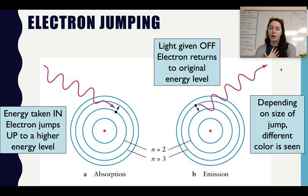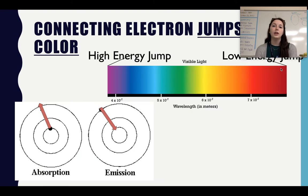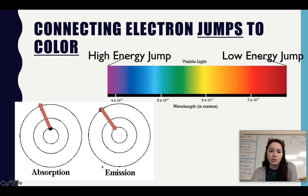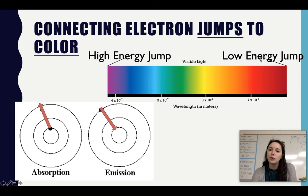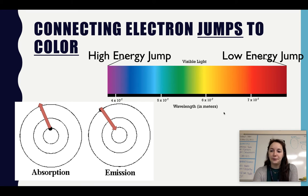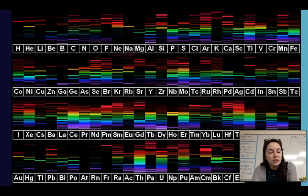Depending on the size of the jump, a different color is seen. A very low jump produces red, while a very high jump produces violet. The higher the energy emitted, the color will be purple; the lower the energy, it's red; and in the middle it's about green or yellow. All elements have different spectra of light that they give off when they do this — hence why we can see it in the spectral tube.